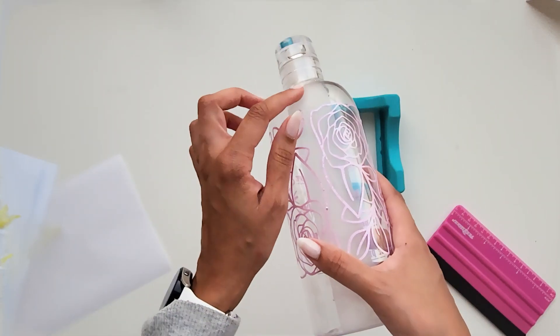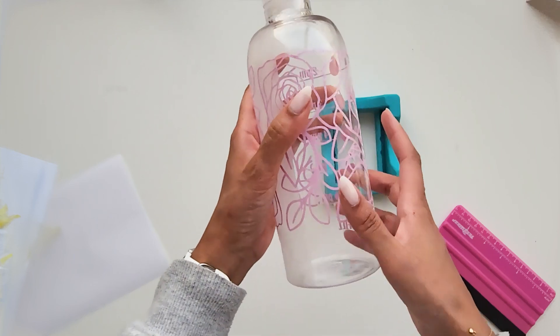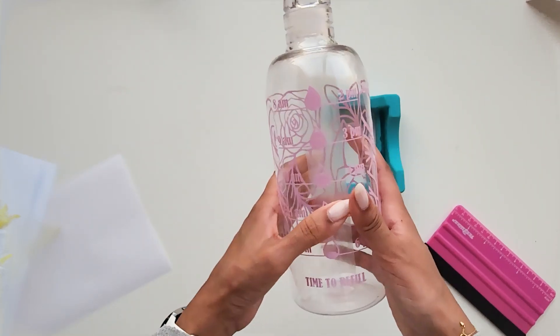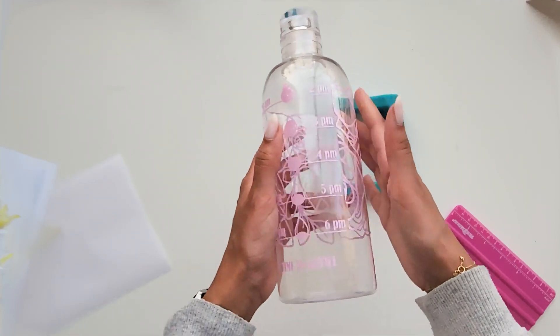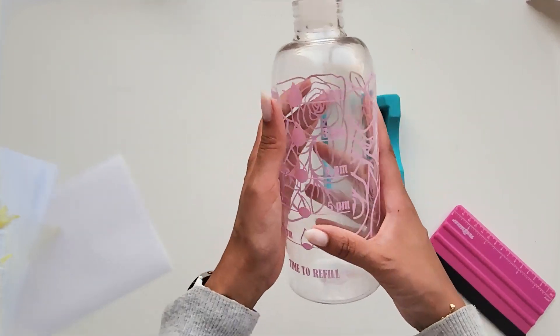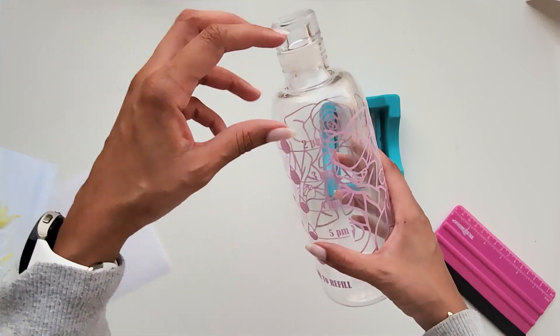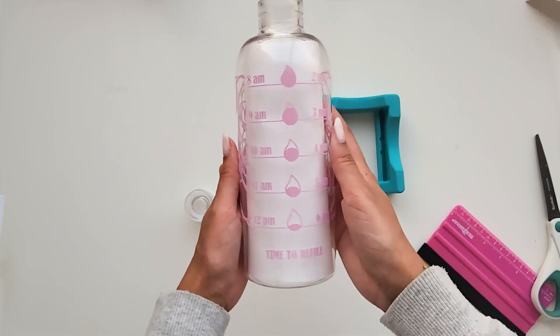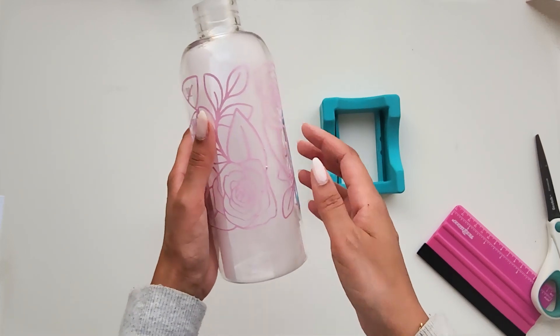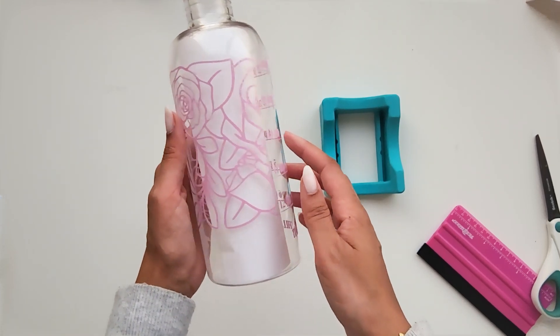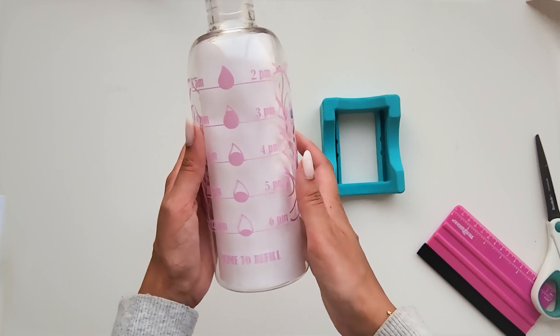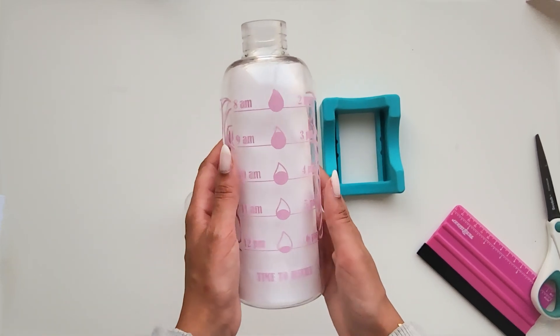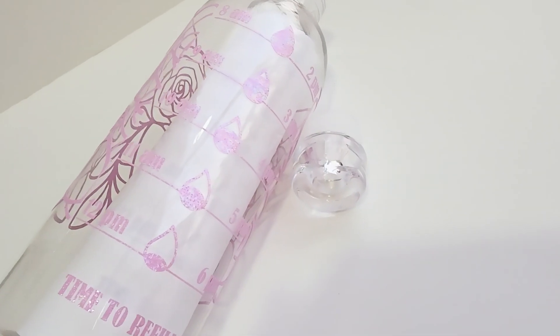So just go around and press any lifted areas. This area of the bottle here is a bit matte, that's why it was lifting, so just give it a press everywhere. And this is how it looks like. I'm going to put a paper inside so that you can see the design clearly. So here is the final design. I hope you guys enjoyed this tutorial. Stay hydrated and I'll see you in the next one.